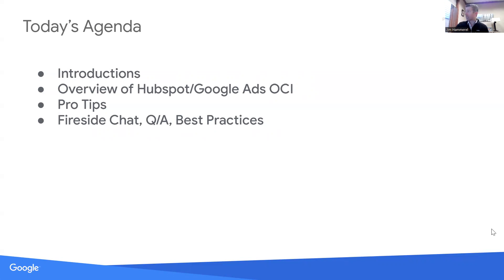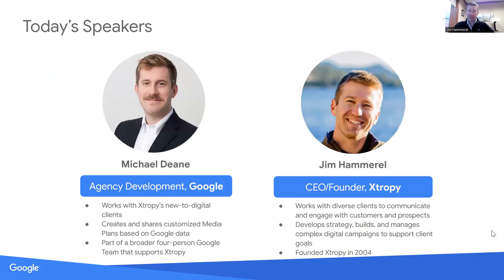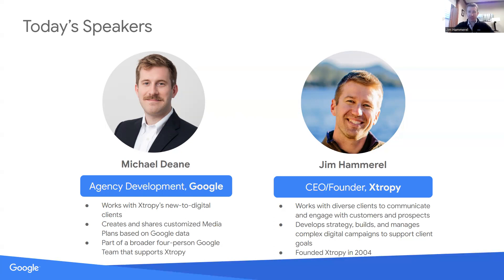My name is Michael Dean, I'm an Agency Development Manager at Google. In six days it'll be my five-year anniversary on our agency team. I worked at agencies for about eight years before that, so I've been all over the place working with and for agencies. My job now is to make sure that partners like Extra Peak get the best that Google has to offer.